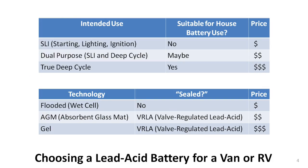You should remember this information from the first video in the series. The top table lists the three general uses for lead-acid batteries and suggests which might be suitable as a house battery in a van or RV. The bottom table lists the three primary technologies used to build lead-acid batteries and identifies which are prevented from spilling. Both tables now have a column added to identify relative cost, giving nine possible combinations of choices.